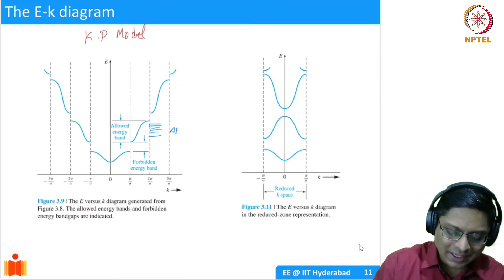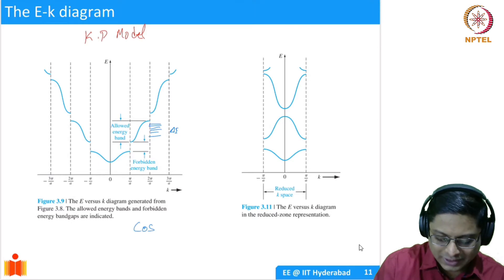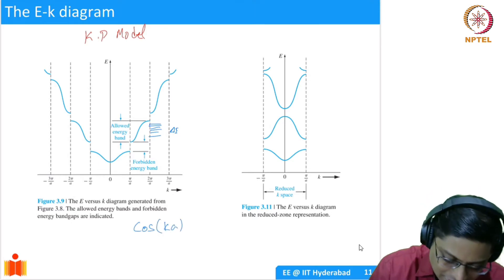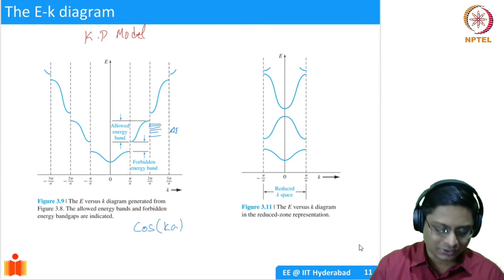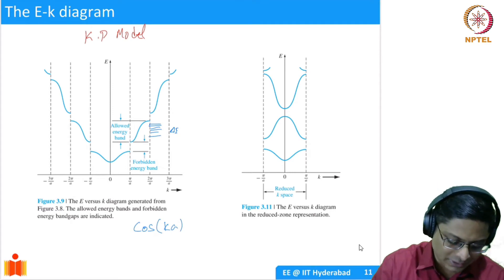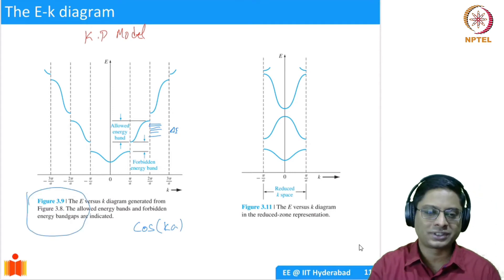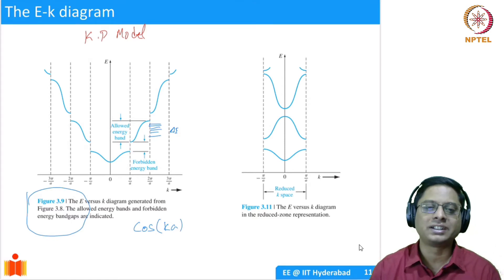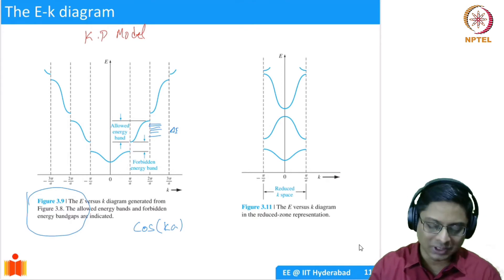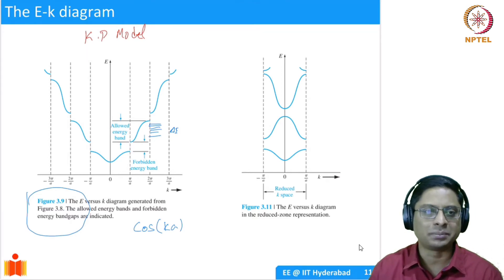The solution here has a function which is basically cos(k times a). This is from the textbook — Donald Neiman's textbook. Whenever I show figures with a caption in this form, it is from the textbook. You can go back and refer to the particular figure and read a little bit more. I use L as the width of the well in class; in the textbook they use A. So basically A is the well width — it's the same thing.